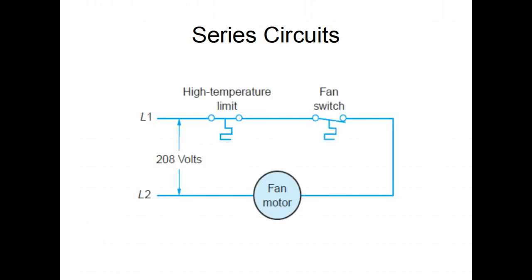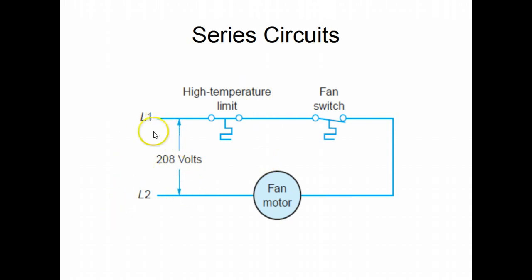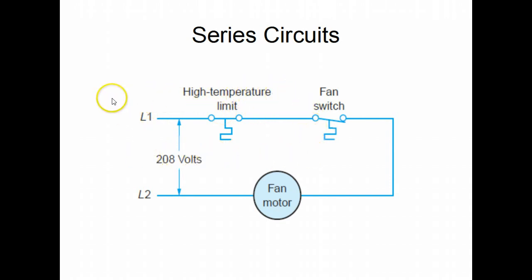Here's another example of a series circuit with a high temperature limit, a fan switch, and a fan motor. In this instance we have only two control devices. But again, everything is in series because it's a straight line between the power source and the return line.